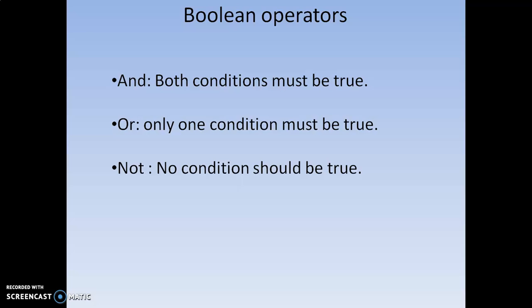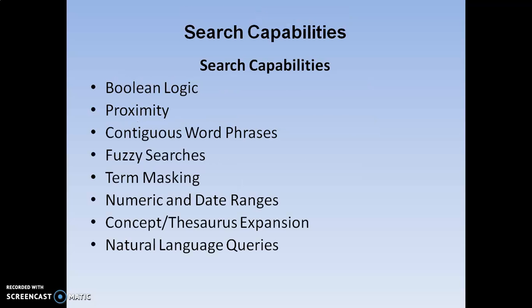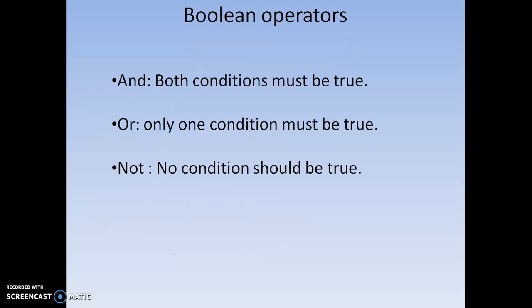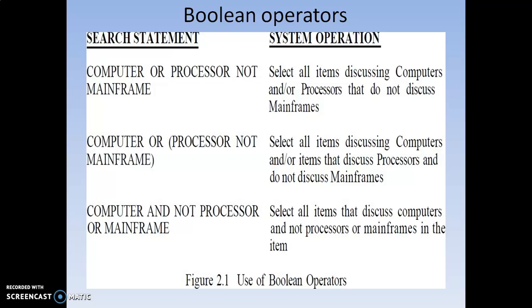Coming to the first one, Boolean operators — it is nothing but Boolean logic. The Boolean operators we are going to use are AND, OR, and NOT. AND can be used where condition A and condition B both must be true. OR means between the two conditions, condition A or condition B, any one must be true. NOT means between two conditions, no one condition should be true. Let us see some examples relevant to the Boolean operators.